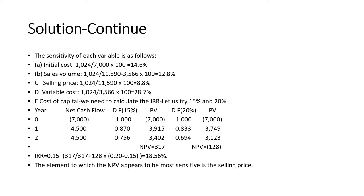C. Selling Price: NPV $1,024 ÷ Cash Inflows $11,590 × 100 = 8.8%. D. Variable Cost: NPV $1,024 ÷ Variable Cost $3,566 × 100 = 28.7%. E. Cost of Capital: we need to calculate the IRR.